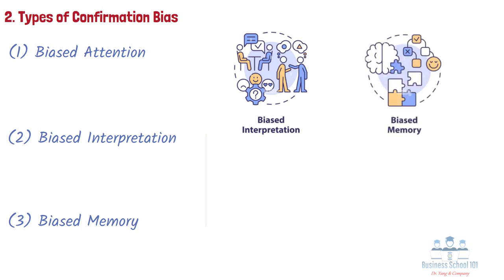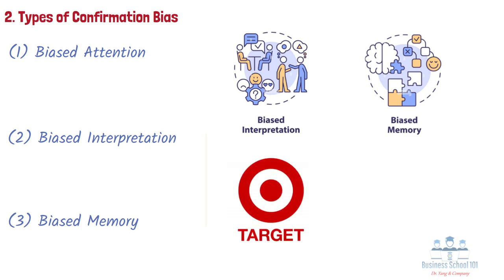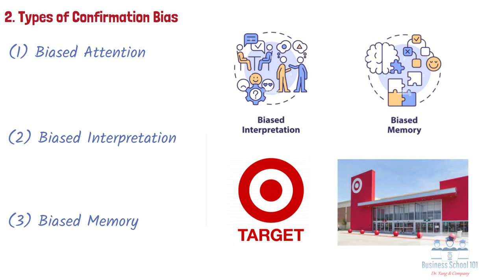This bias can also be observed when consumers retrieve information from their memory. For example, if consumers like shopping at Target, they will remember positive experiences, such as having a significant discount or enjoying Target's bright and colorful store atmosphere.